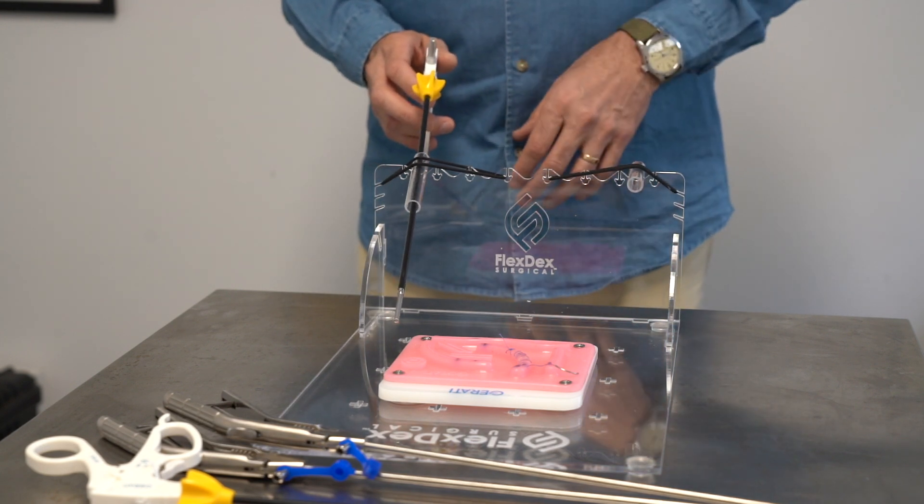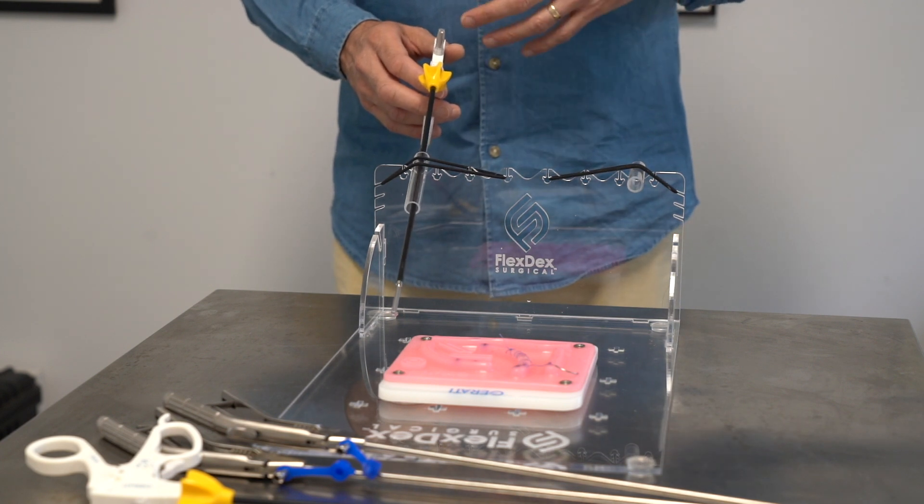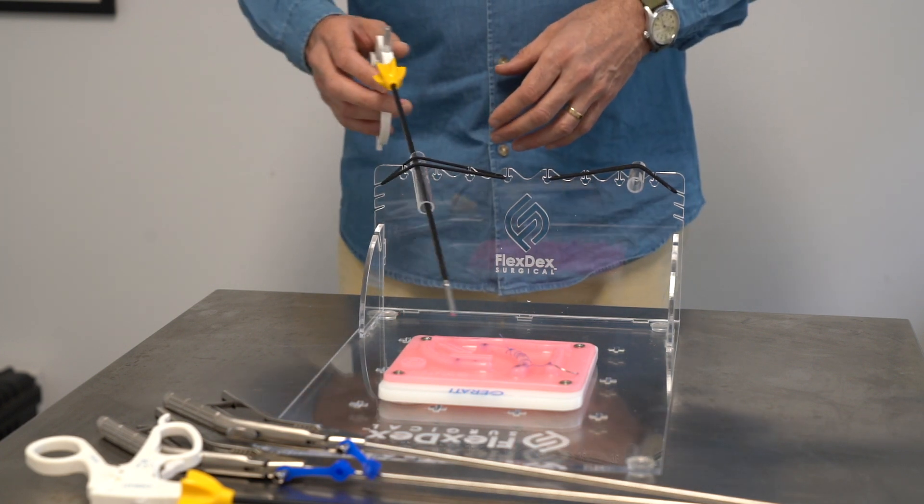It's the same with laparoscopic surgery. Because there's a fulcrum at the body wall, you have to learn to reverse your movements on the outside of the abdomen.